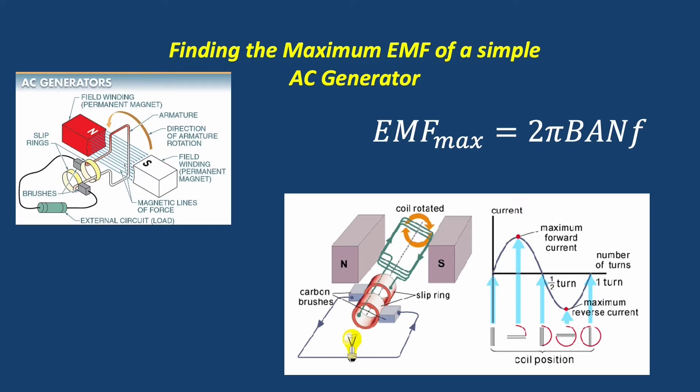The maximum EMF of a simple AC generator is equal to 2πBANf, where B is the magnetic field that the coil is rotating through, A is the cross-sectional area of the coil, N is the number of turns in the coil, and f is the frequency of rotation for the coil.